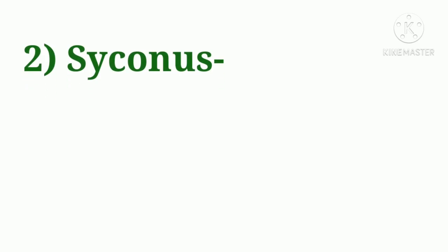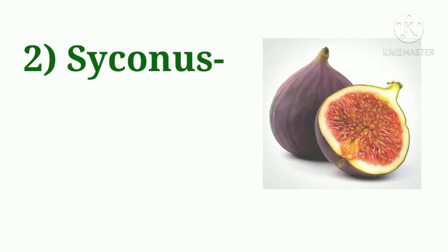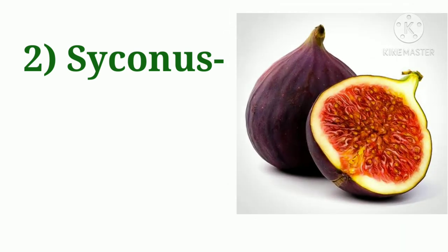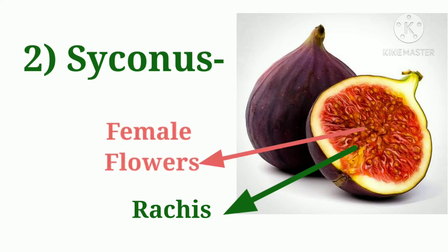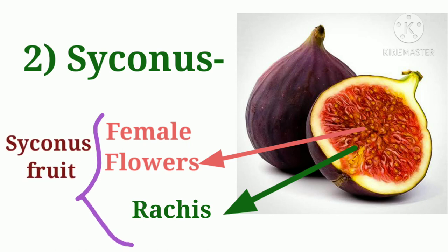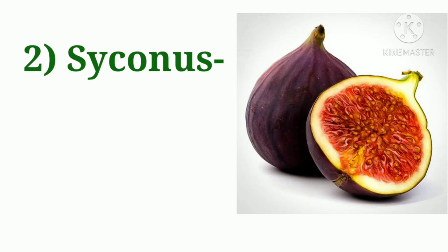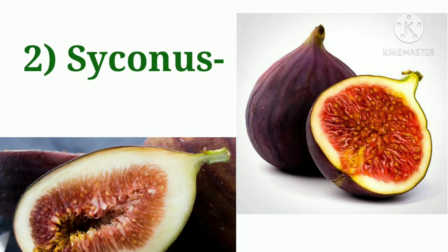The next type of fruit is the syconus. In this case it develops from a hypanthodium inflorescence and the fleshy rachis of the inflorescence becomes succulent. The rachis contains many tiny small flowers which convert into a syconus type fruit. So syconus type fruit always develops from a hypanthodium type inflorescence.